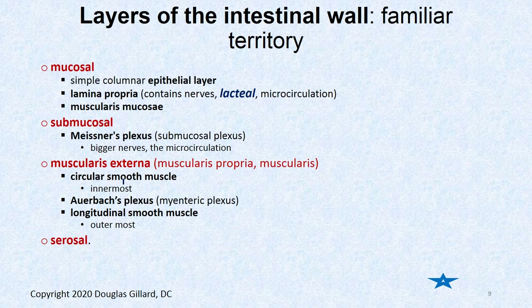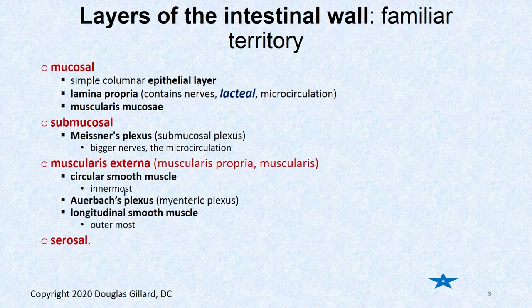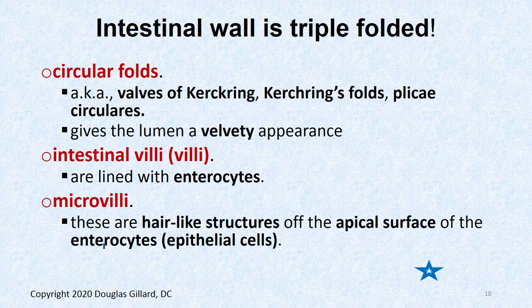There are nerves in the lamina propria as well, so it doesn't take much to irritate the small bowel. Then we go into the muscularis externa — also called the muscularis propria or just the muscularis. It's smooth muscle with a double muscular layer: a circular inner layer and longitudinal outer smooth muscle. Auerbach's plexus is sandwiched between those two layers. Last but not least, we have the serosal layer.